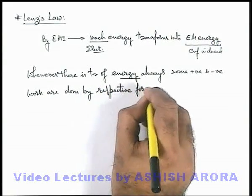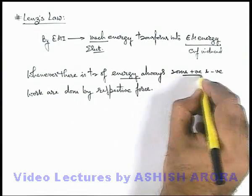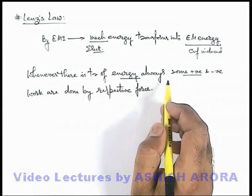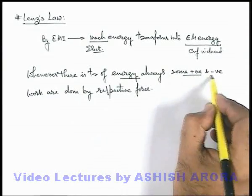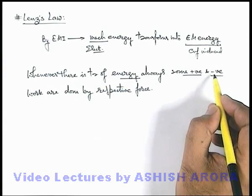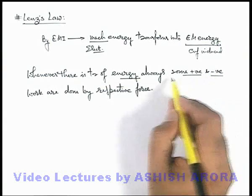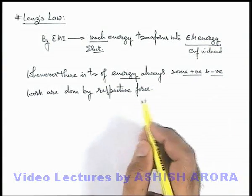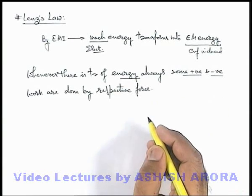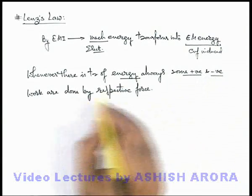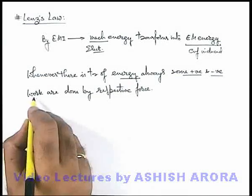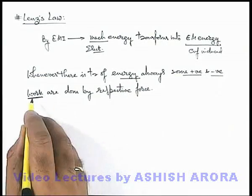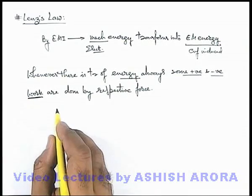That means positive work is done by the type of force which is supplying energy. Negative work is corresponding force which is gaining energy into a different form. So here we can say always some positive and negative work is done, and negative work implies the force which is opposing the process from which the gain of energy is there.